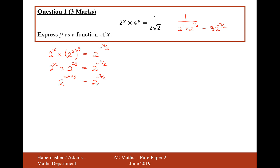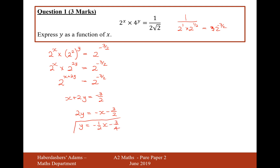Now that they're both to the power of 2, we can say that the indices are equal to each other. So x plus 2y equals minus 3 over 2. The last thing to do is make y as a function of x. Subtract the x onto the other side and divide by 2, and we get y equals minus 1 half x minus 3 over 4. And there we are — that's the answer for this question. So that's 3 marks.